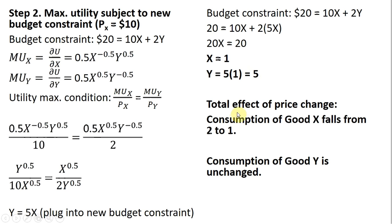To get the total effect of the price change, consumption of good X falls from 2 to 1, and the consumption of good Y is unchanged — Y equals 5 in step 1, and Y equals 5 in step 2.